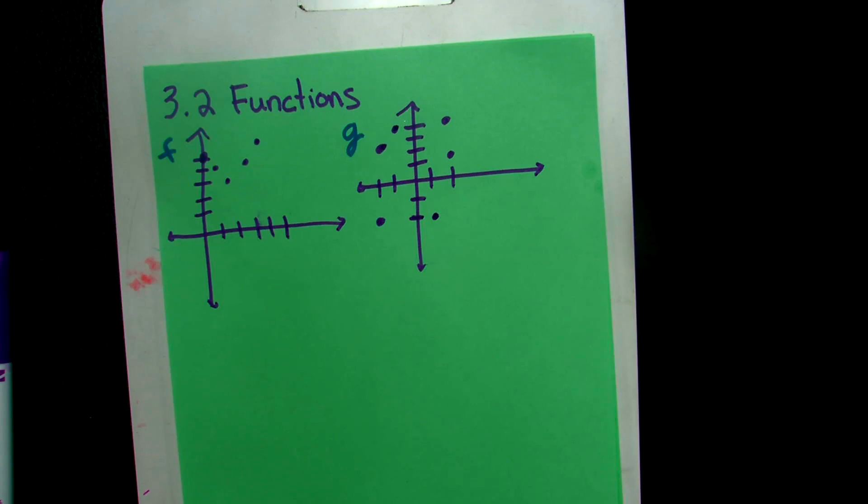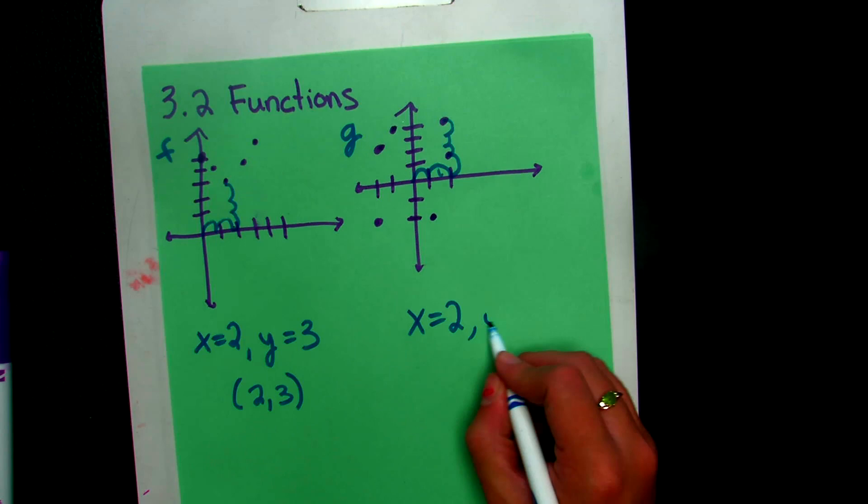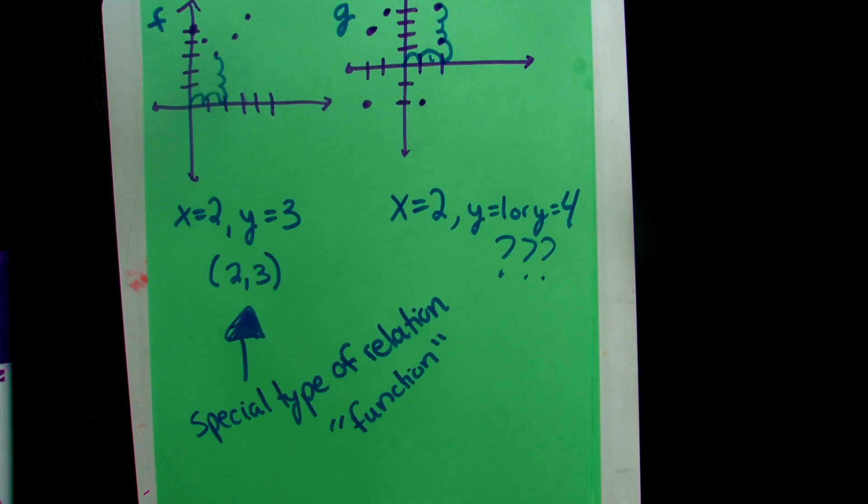In our second graph, there are two possible answers for when X is equal to 2. We have Y equals 1 and Y equals 4. So which one do you write? Both of these graphs represent relations. However, this first graph here is a special relation called a function. It is a special type of relation. The reason that this is going to be a special kind of relation called a function is that there's only one Y value for any X value. So any X value that you pick, there's only going to be one possible Y value that matches it.